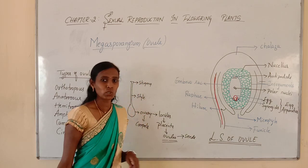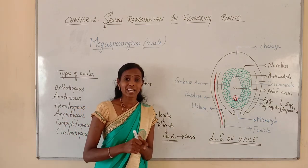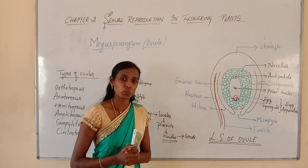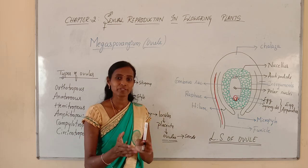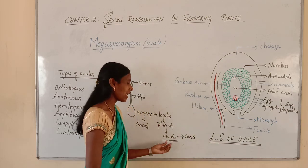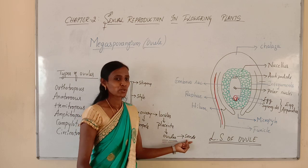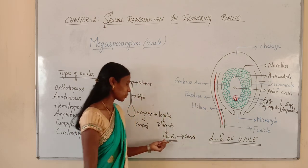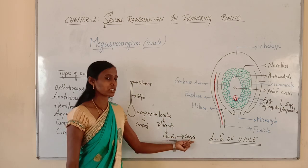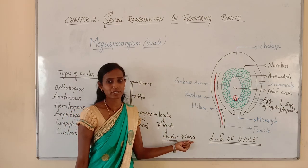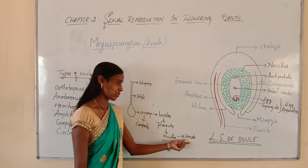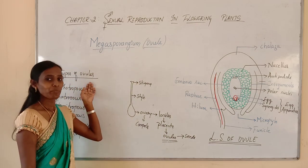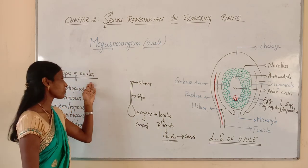These ovules, after fertilization, develop into seeds. Whatever seeds you can observe in a fruit, they are nothing but ovules. Ovules develop into seeds only after fertilization. There are different types of ovules.